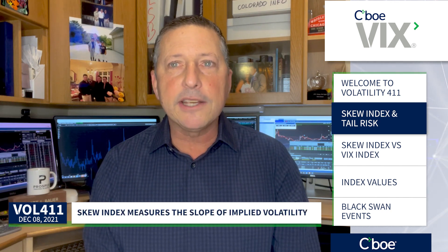Specifically, the index measures the slope of implied volatility, which can then be expressed as the probability of a two or even three standard deviation move by the S&P over the next 30 days.